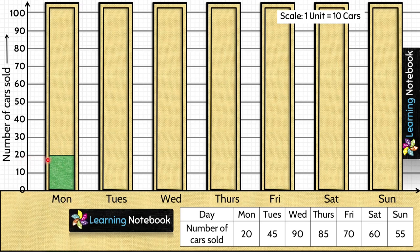Next, look at number of cars sold on Tuesday. It is 45. So let's insert a blue colored bar in the next window. And we will adjust its height to represent 45 on y-axis.